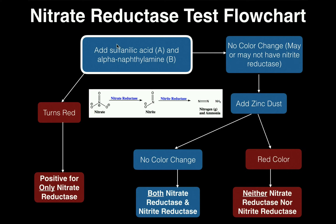For some species, you'll add the 16 drops of sulfanilic acid and alpha-naphthylamine and see no change — it'll just stay the same color as the broth. In this case, when there's no color change, you may or may not have nitrite reductase. In other words, when you have no color change after these first two reagents, you either have both enzymes or you have neither of them. So you have to add zinc dust — a match-head-sized amount of zinc powder to the broth. After adding the zinc, pretty quickly either there will still be no color change, or there will be a red color.